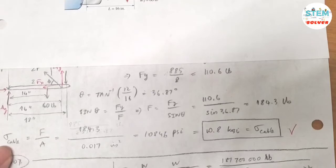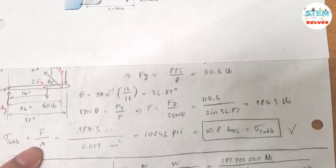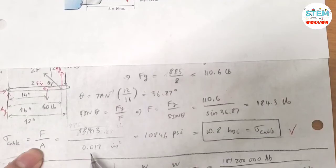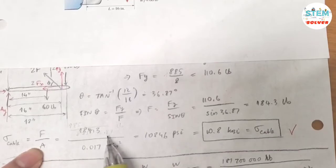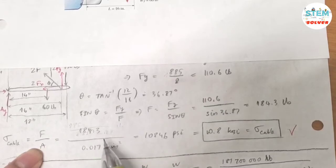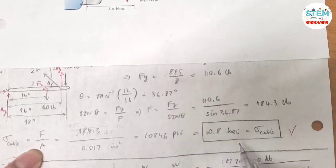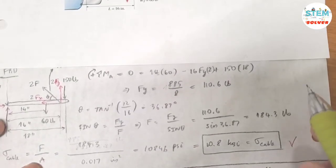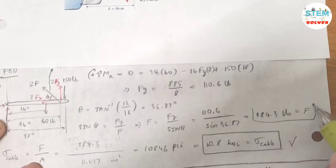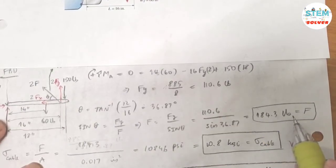Last step: the stress in the cable equals the force divided by the cross-sectional area. The area is 0.017 square inch and the force is 184.3 pounds. That gives 10,846 psi, which is 10.8 kpsi. So the two final answers are: the tension force in each cable is 184.3 pounds, and the normal stress is 10.8 kpsi.